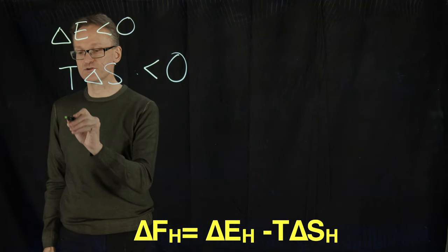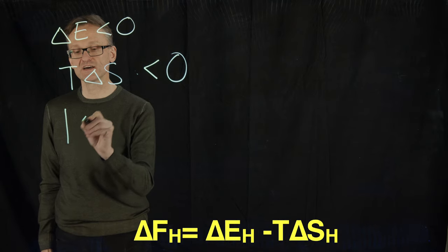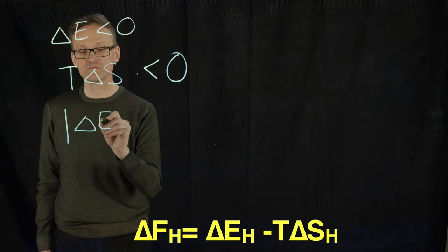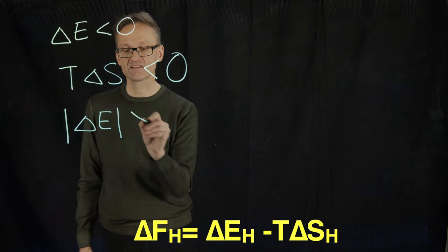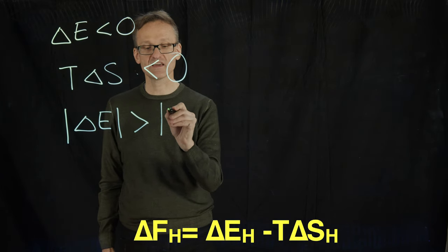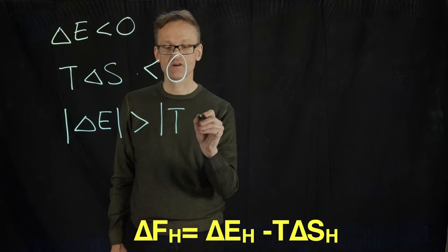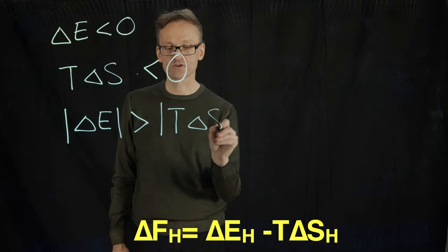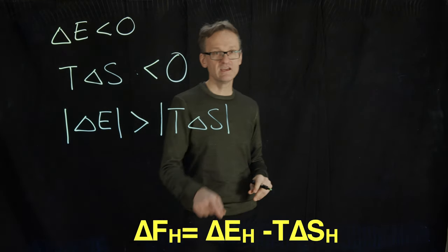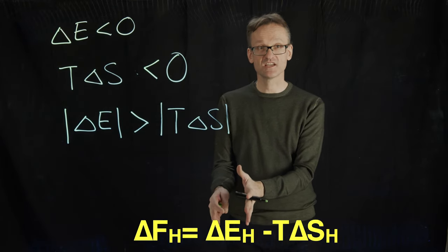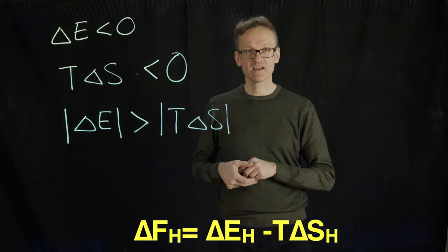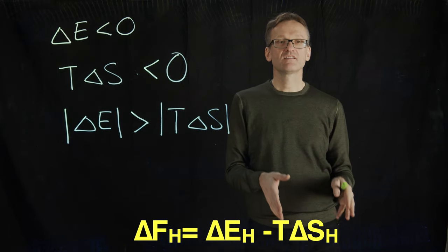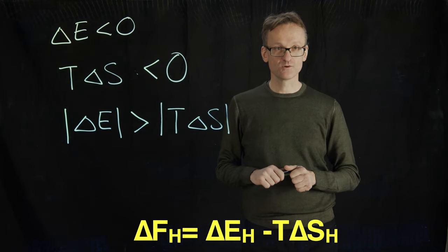So the absolute value, in the case where the hydrogen bond does form, must be that the absolute value of the energy term must be larger than the absolute value of the entropy term. So the gain we get here, the absolute value of the change—because note the term itself is negative—but the absolute value we gain is more than the energy term we lose in the entropy.